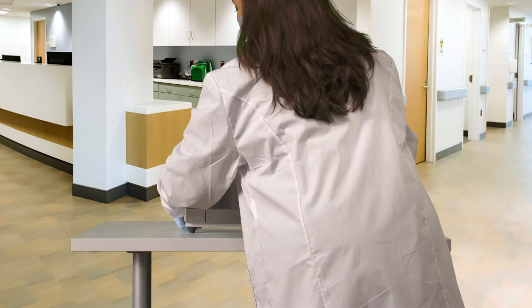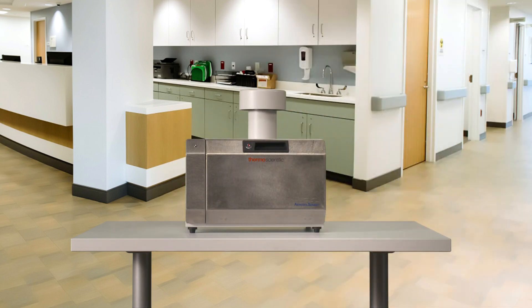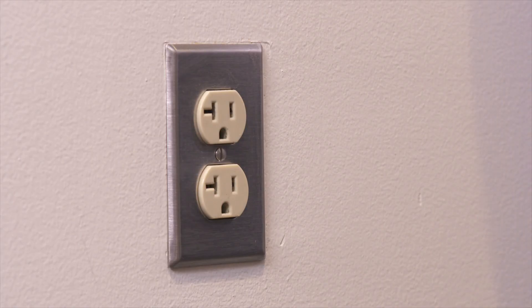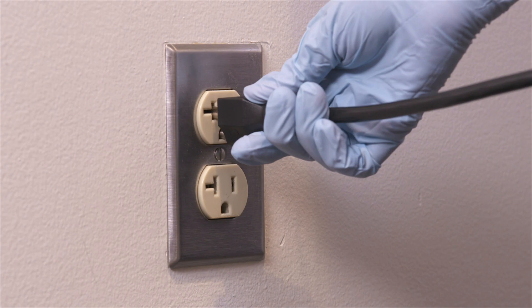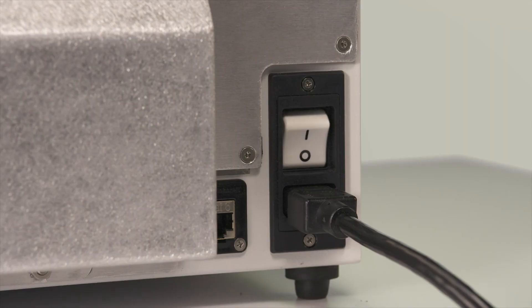First, place the sampler on a flat surface two to five feet off the ground. Ensure the inlet and exhaust are unobstructed. After plugging the sampler in, toggle the power switch to on.